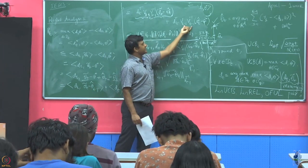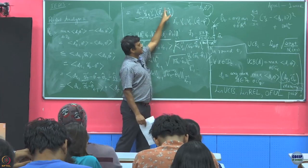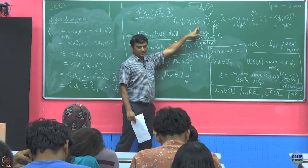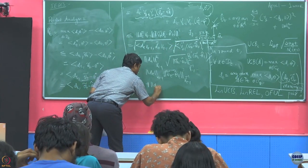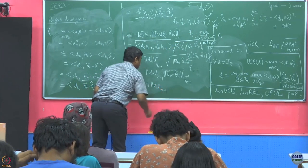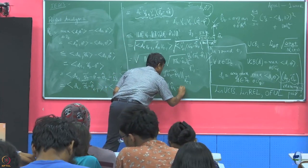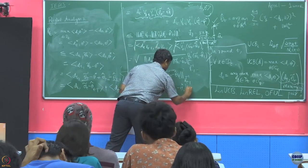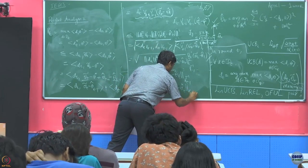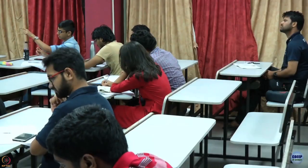I can do the same thing for the second term — everything remains the same except that θ̃_t is replaced by θ̂_t. If I do the same calculation there, I get the extra second term involving ||θ̂_t − θ*||_{V_{t−1}^{−1}}.